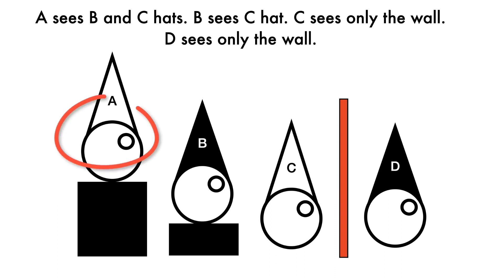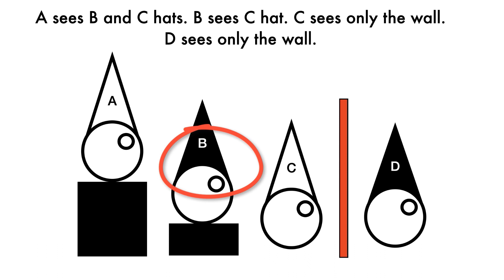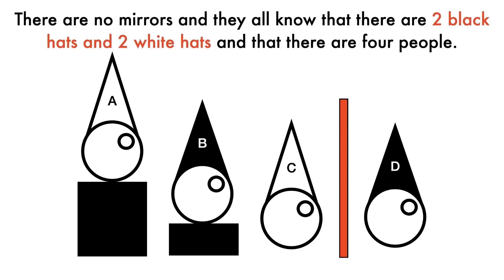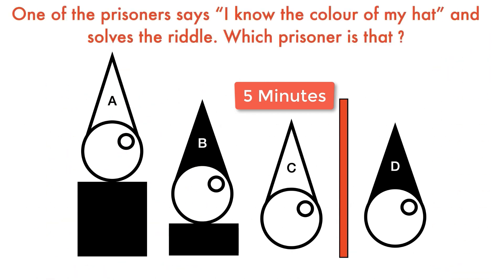Three prisoners stand in a line facing a brick wall. Prisoner A stands on a box at the back and can see both prisoners B and C in front. Prisoner B stands on a smaller box and can only see prisoner C, who can only see the wall. The fourth prisoner D stands on the other side of the wall and can see nothing. They cannot turn around or converse. They have five minutes, and one of them must call out as soon as they know their hat color for certain. Which prisoner solves the riddle?